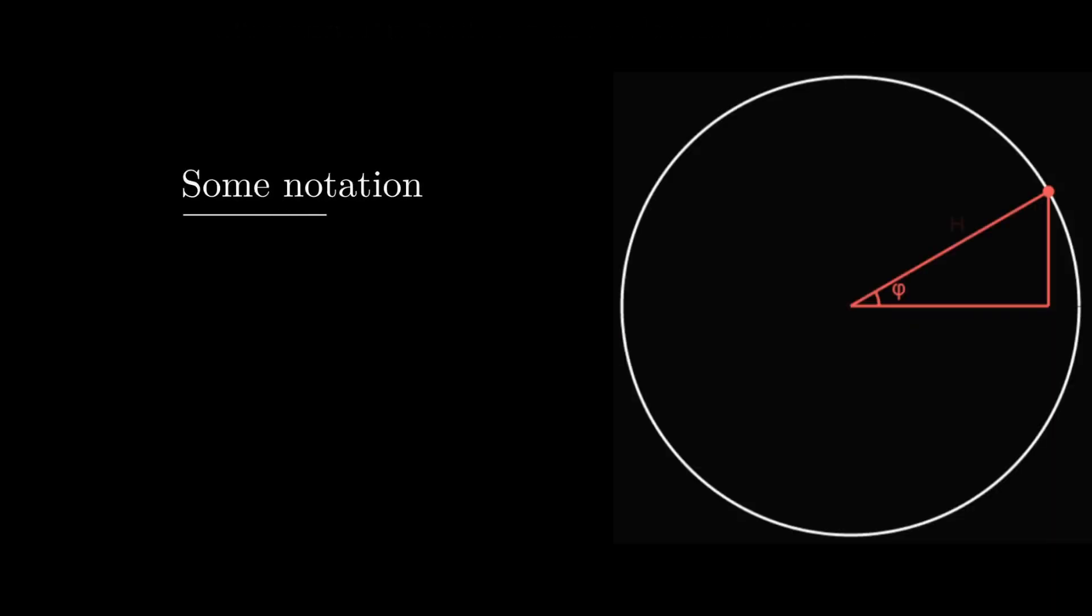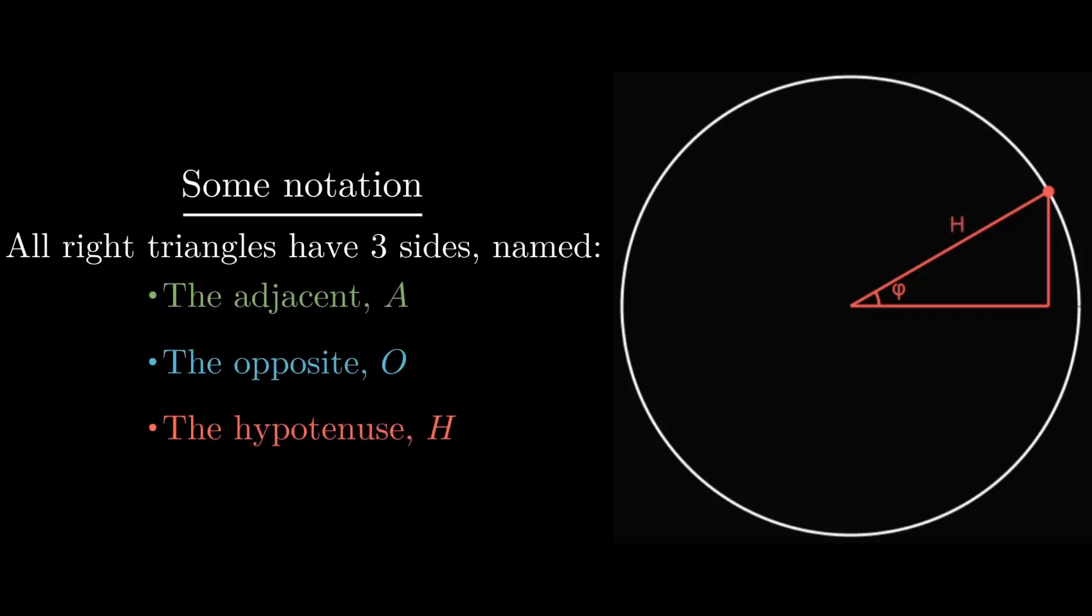Now for some notation. Every right triangle has three sides. We have a special way of labeling those sides. The red side is called the hypotenuse, or H.